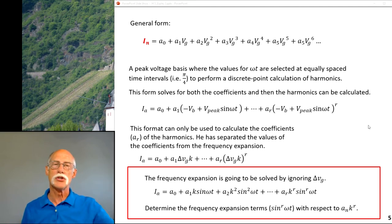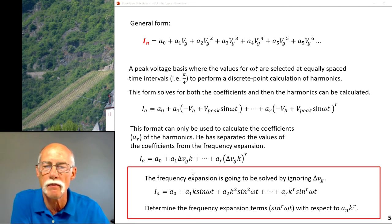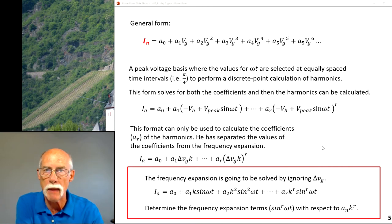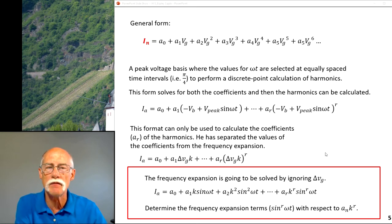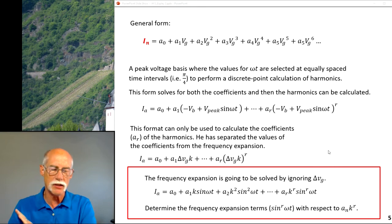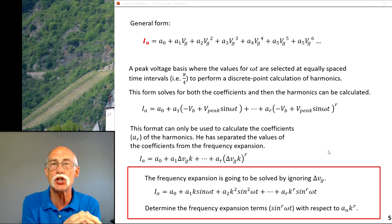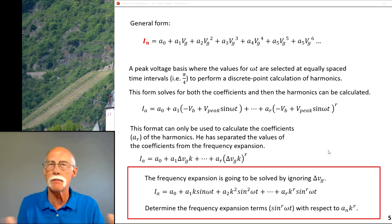We start with the general form, we've got the middle form, we're down here at this bottom form. Now what we want to do is go through and look at the frequency expansion using that form of the equation. But in this case, what he did was we're going to drop the delta Vg term for now. It's ubiquitous to the equation and there's no point in carrying through a term that doesn't add any value. So to keep the work a little bit simpler, we're going to drop that term for now.